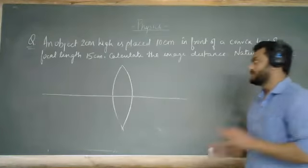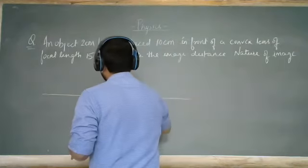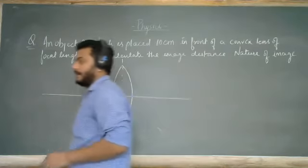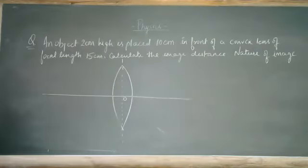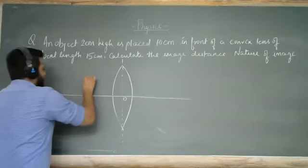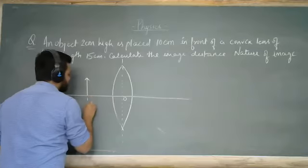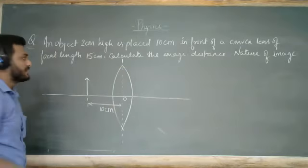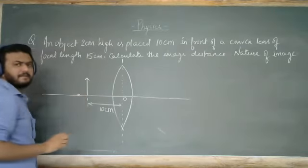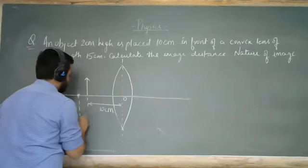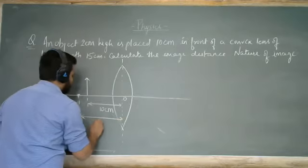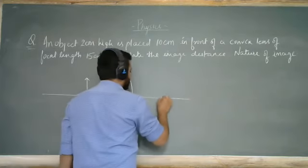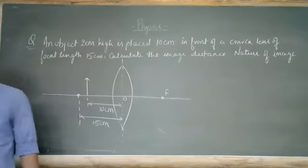Without calculating, we can tell the nature of the image — we need to know the logic, the table, and the ray diagram. This is my optical center. I will keep the object here at a distance of 10 cm in front of the convex lens, and the focal length is 15 cm. I will focus here and look at the diagram.